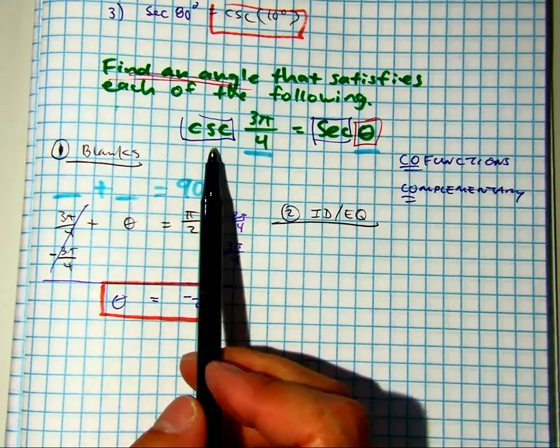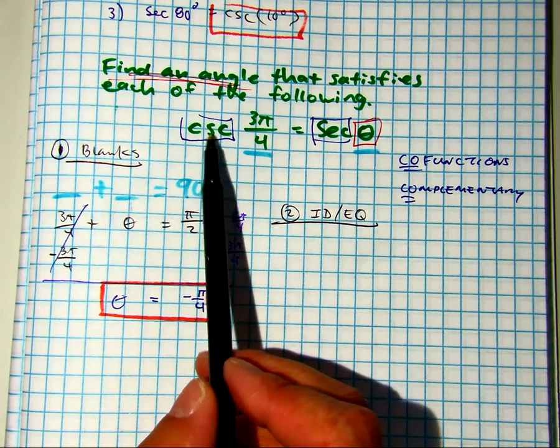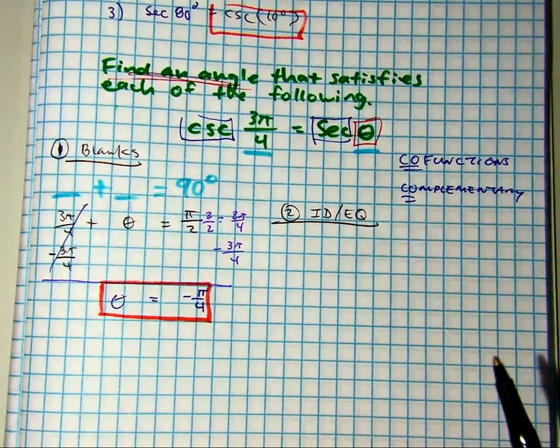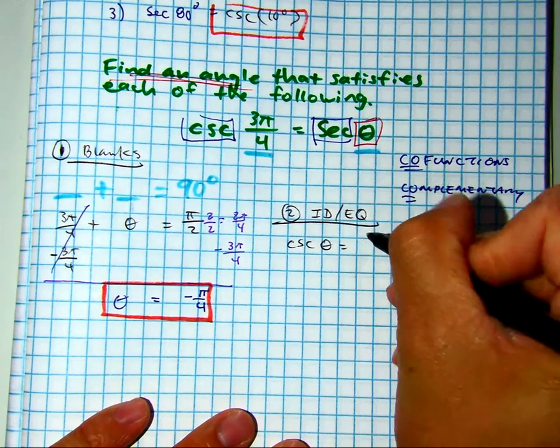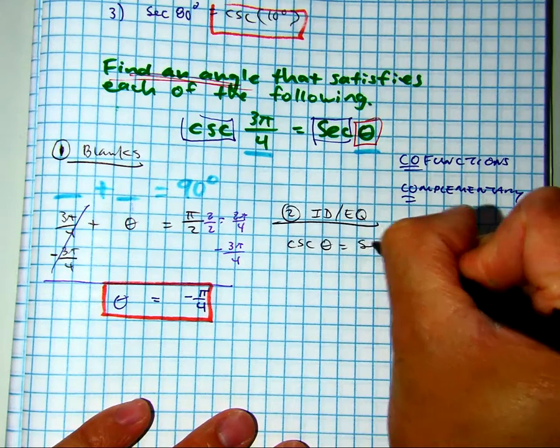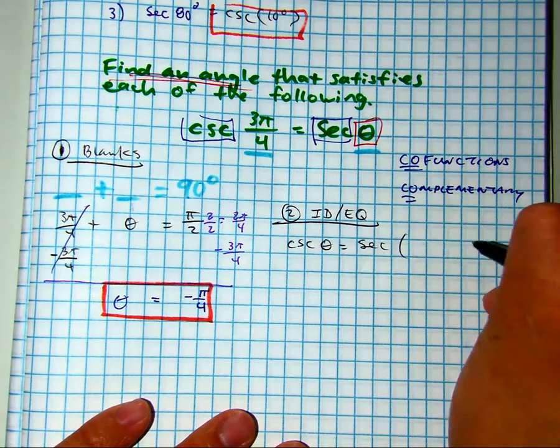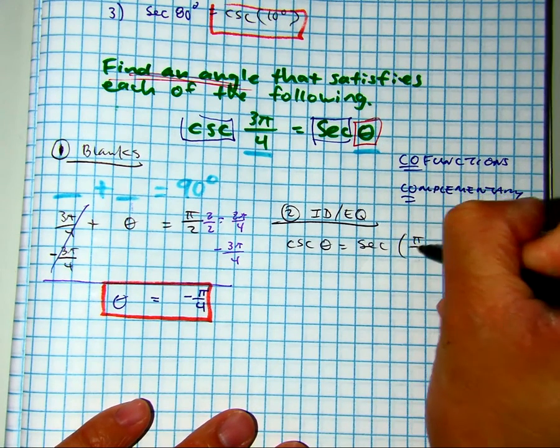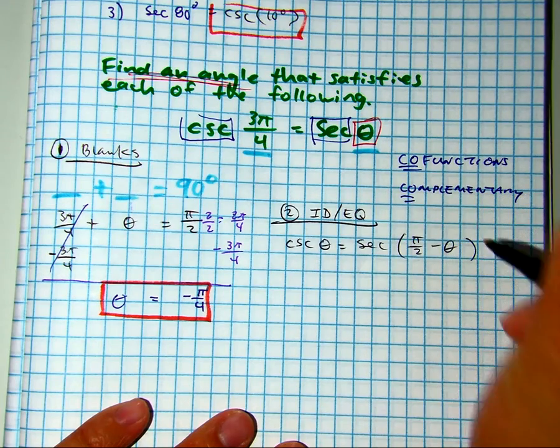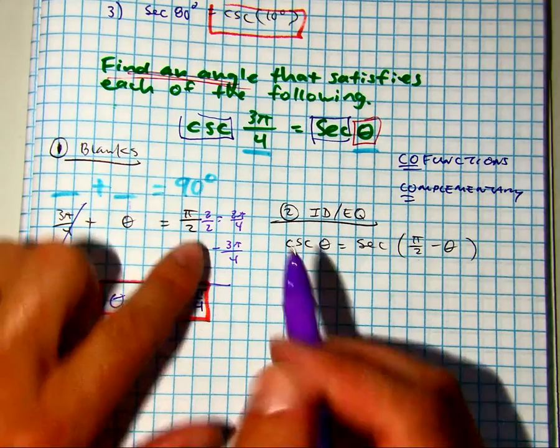Nelson, what is the formula or identity I gave you for cosecant of an angle? So cosecant of theta equals secant of pi over 2 minus the angle, right? And if you look at the problem,